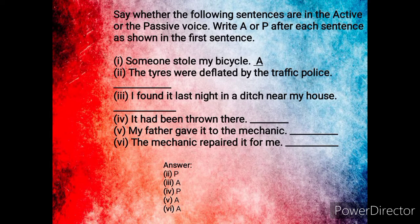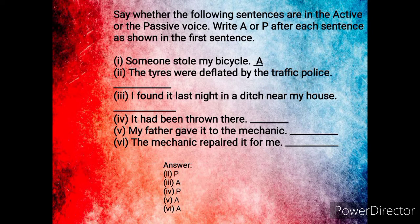Now, see whether the following sentences are in active or passive voice. First: 'Someone stole my bicycle.' This is active voice, as the doer of the action is named and the verbs are in active form. Second: 'The tyres were deflated by the traffic police.' Here, the word 'were' shows that it is passive voice.